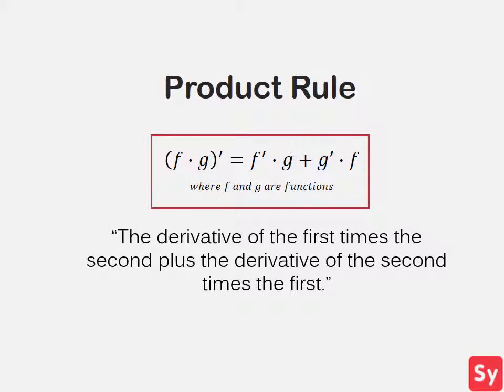Here is the product rule. We use the product rule when taking the derivative of one function multiplied by another function. My teacher in high school had us memorize it by repeating this over and over again: the derivative of the first times the second, plus the derivative of the second times the first, where the first is the function f and the second is the function g.